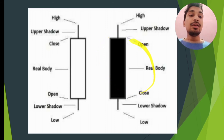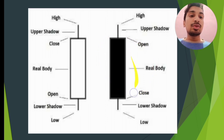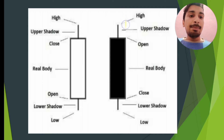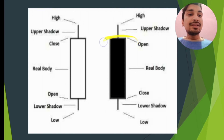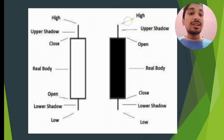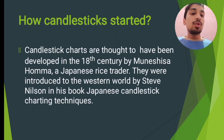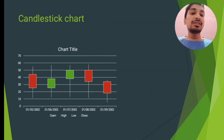In the case of a red candle, because the price goes downward, the top of the body is the opening price. The price might have gone up first, then down to the lowest, and then closed lower. So the opening price is at the top, the closing price is lower down, the highest point reached is the top wick, and the lowest price the share has gone to is the bottom wick.